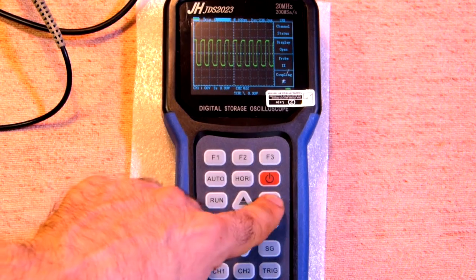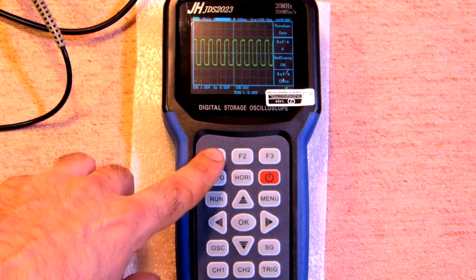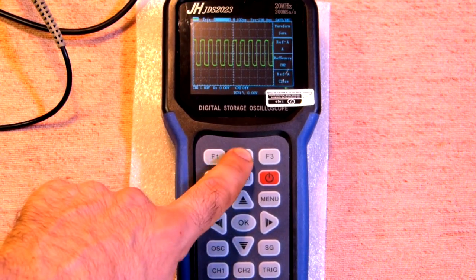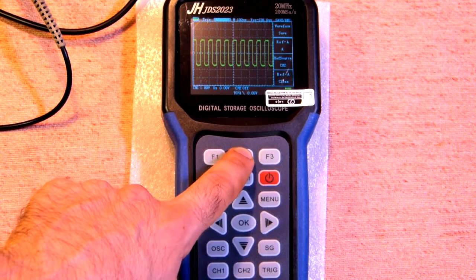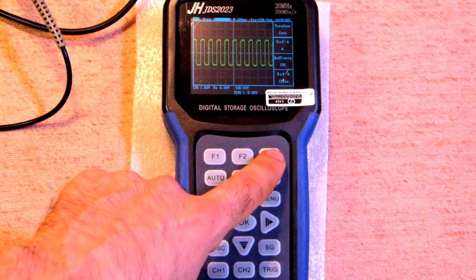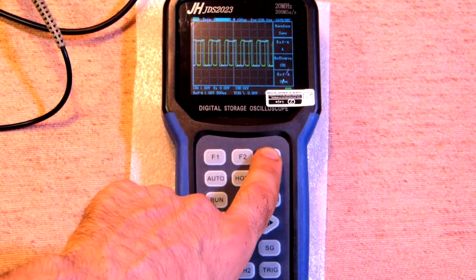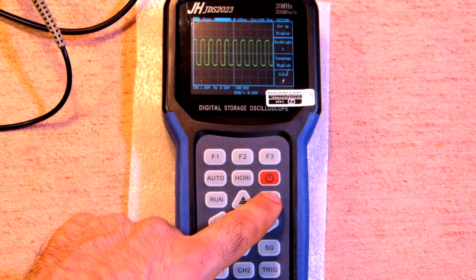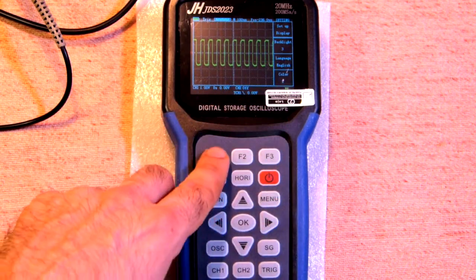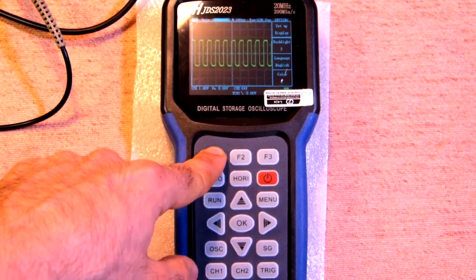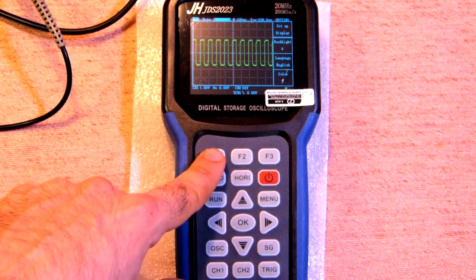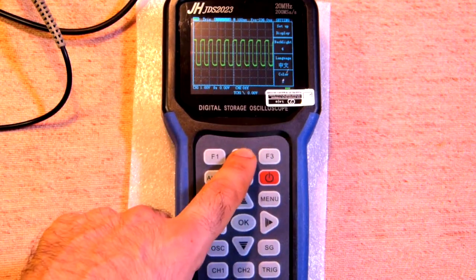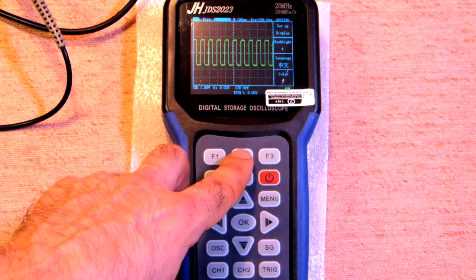As to the menu button, here we have waveform save. So the function one is REF-A, REF-B. The F2 is source, channel 1, channel 2. REF-A is close and open. Also on second press set up display. This is backlight, 6 values. Language English or Chinese only. So it's Chinese and you should restart this device. This is English.